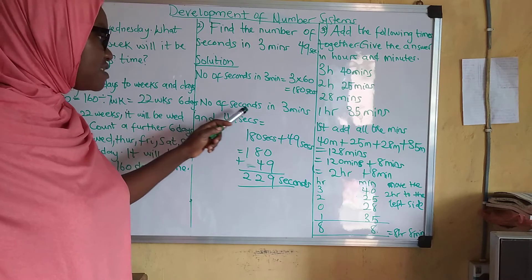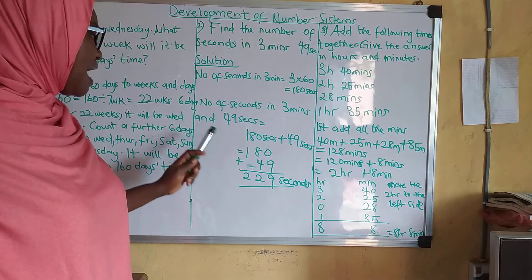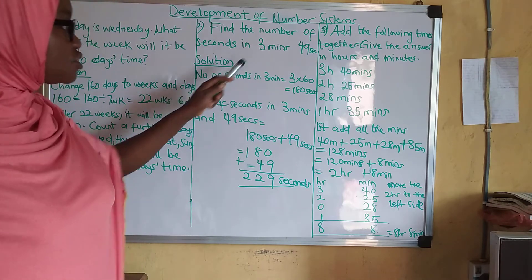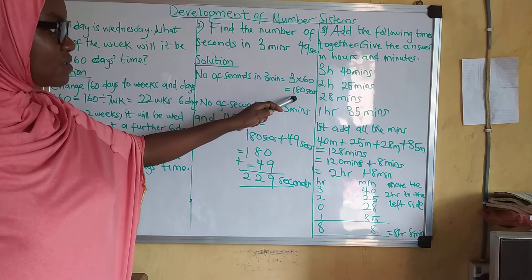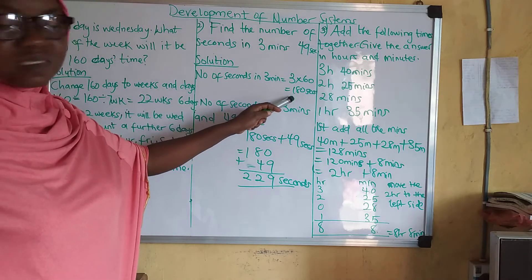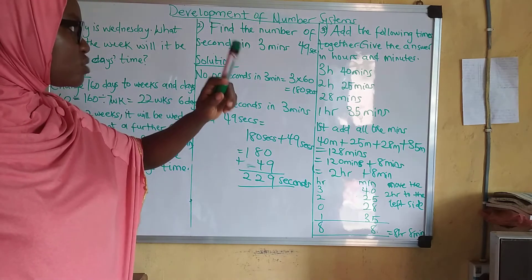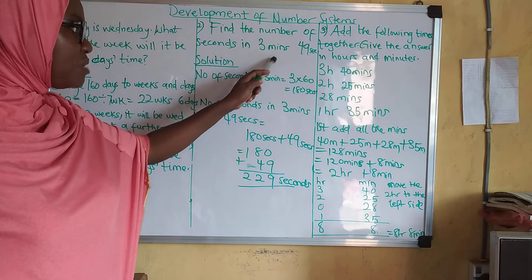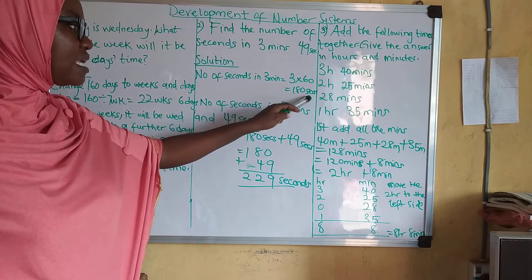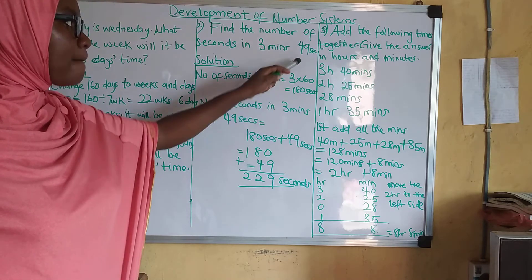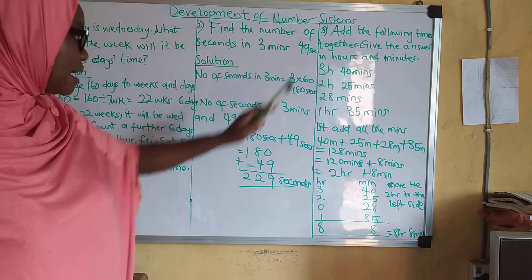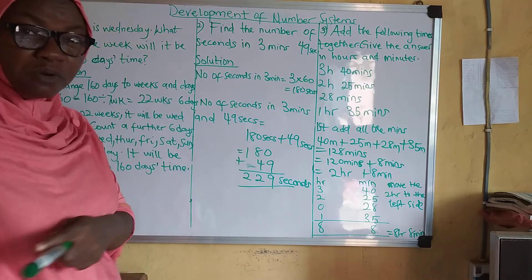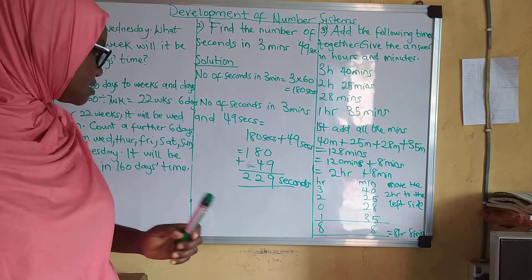Now, the number of seconds we have in 3 minutes and 49 seconds — we've been able to change 3 minutes to 180 seconds. Altogether, we are going to have the 180 seconds plus 49 seconds, and that gives us 229 seconds. You might want to see how I get it.